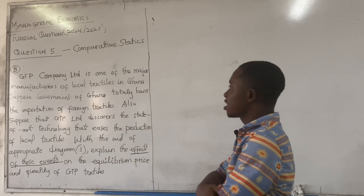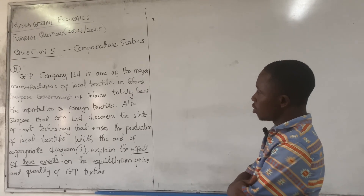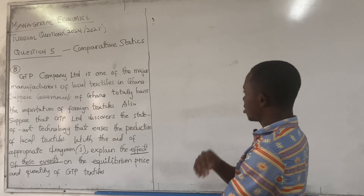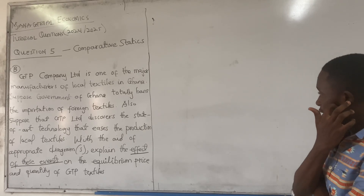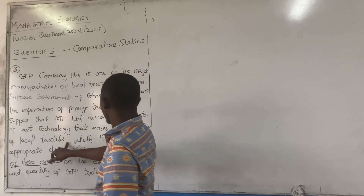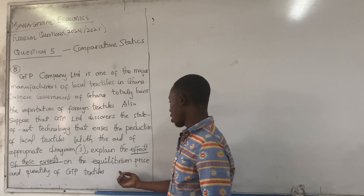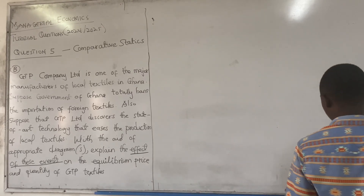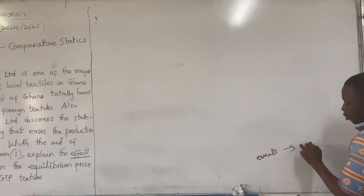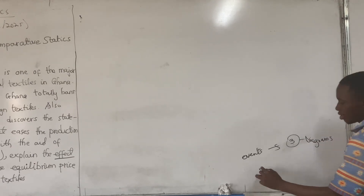Let's go over again. GTP Company Limited is one of the major manufacturers of local textiles in Ghana. Suppose the government of Ghana totally bans the importation of foreign textiles. Also, suppose that GTP Limited discovers the state-of-the-art technology that eases the production of local textiles. With the aid of appropriate diagrams, explain the effects of these events on the equilibrium price and quantity of GTP textiles. So since we are having events, we are supposed to get three diagrams.